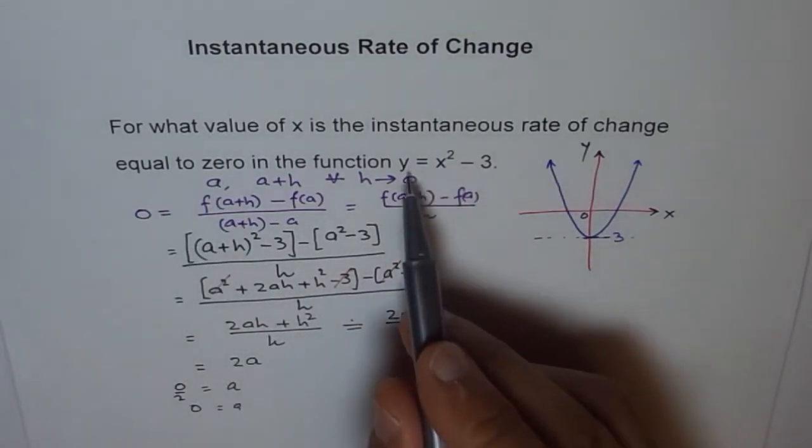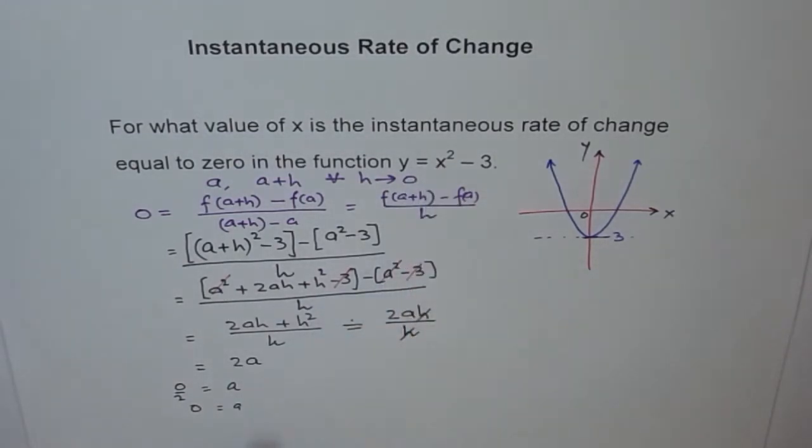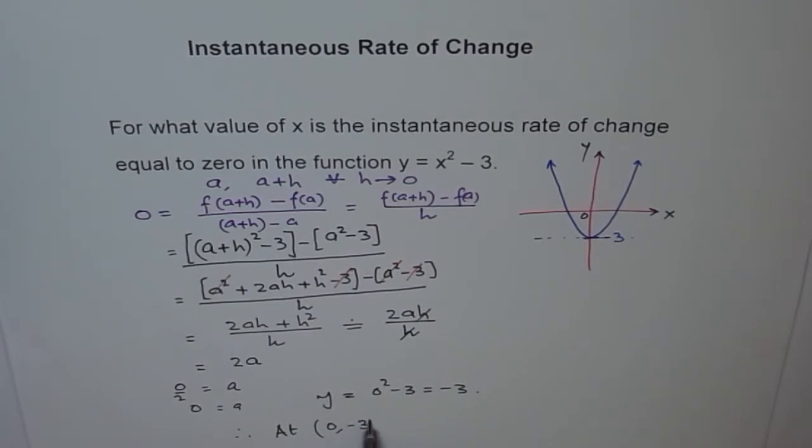So the point at which the x value at which the instantaneous rate of change is 0 is x equals to 0. And if x is 0, then what is y? So we'll just plug in here as the y value will be, we'll say A is 0, but y is equals to 0 square minus 3, which is minus 3. Therefore, at 0 minus 3, the instantaneous rate of change is equal to 0.